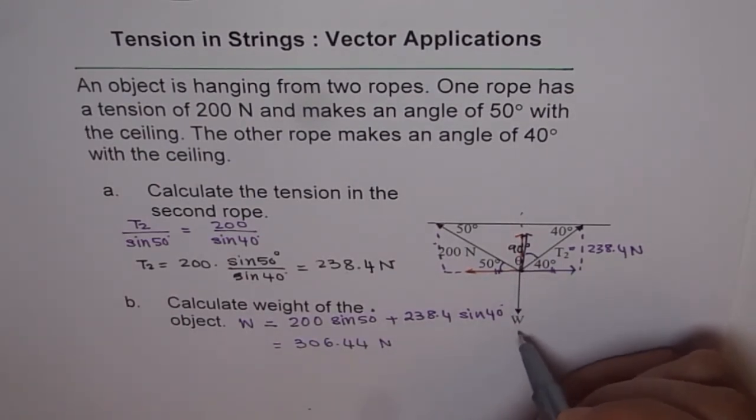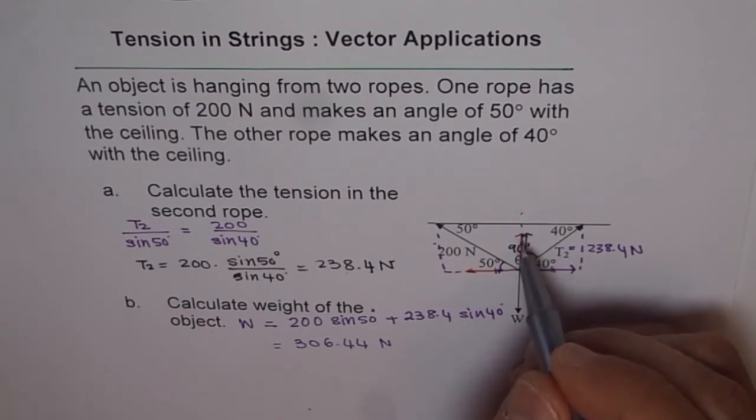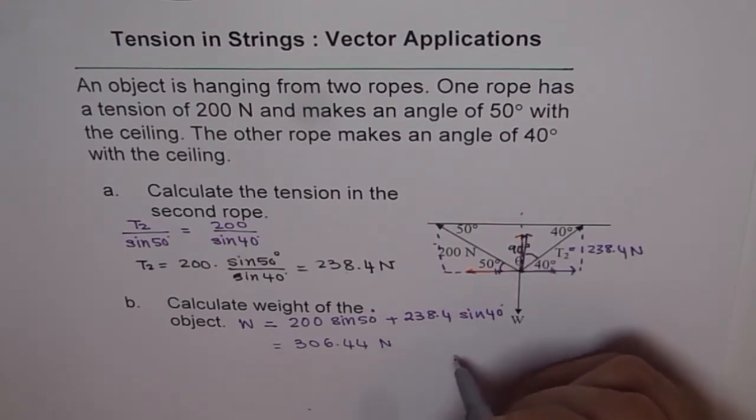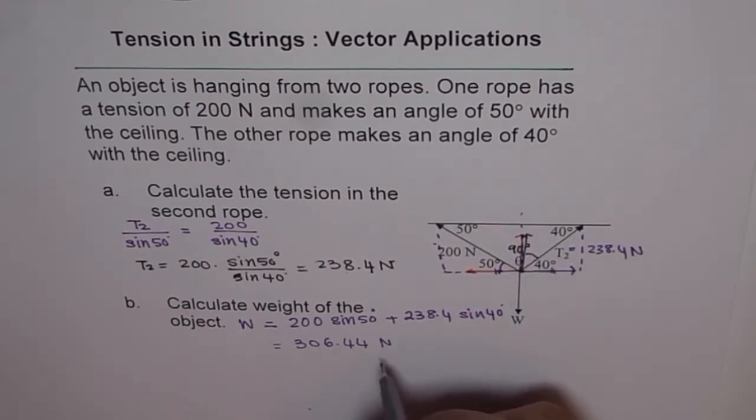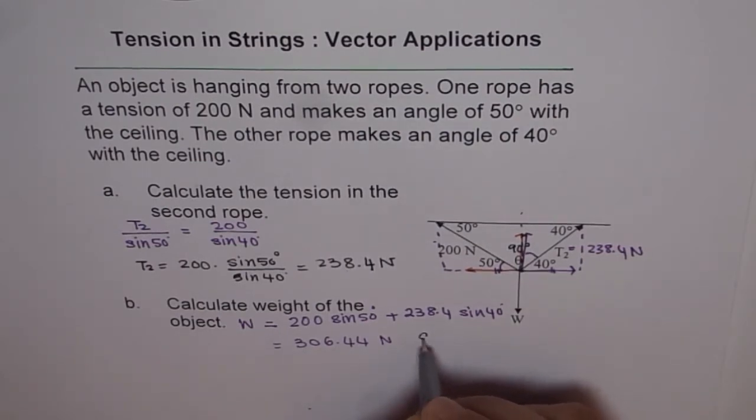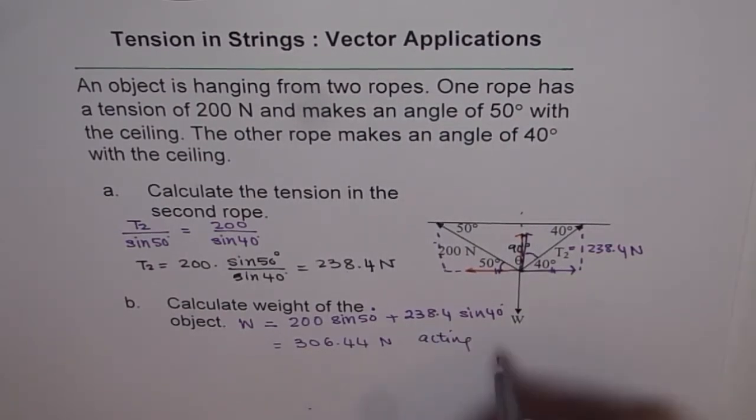Weight is taking care of that upward force and weight will always be acting downwards. Weight is 306 newtons acting downwards.